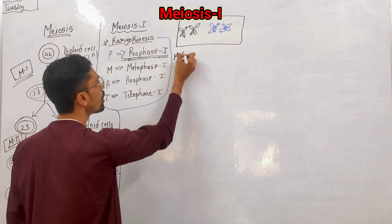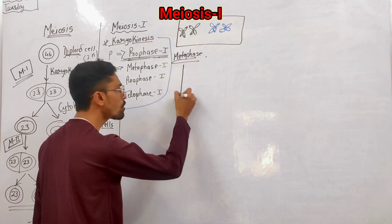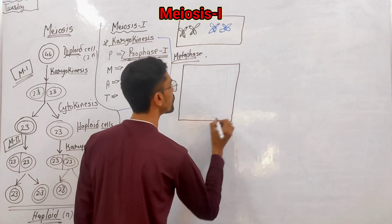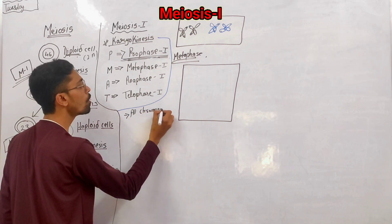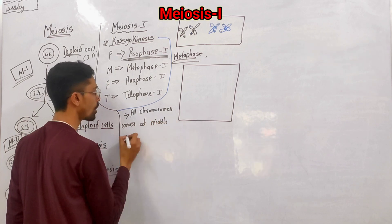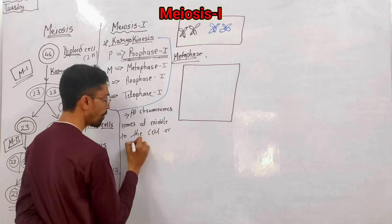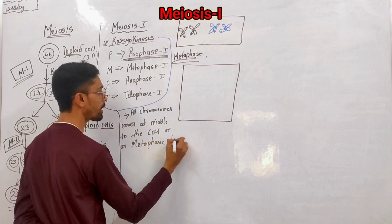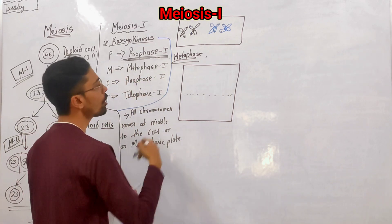What happens in metaphase? In metaphase, suppose this is one cell — the first thing is that all chromosomes come to the middle of this cell, the middle of the cytoplasm. This is also called the metaphase plate. All chromosomes come to the metaphase plate in the center.